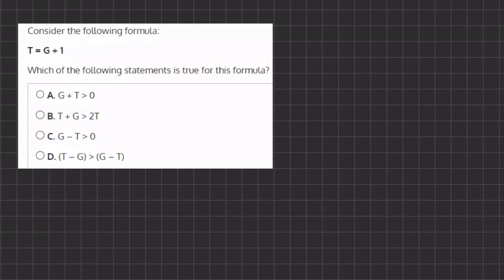All right, let's take a look at this problem. We are given a formula, T equals G plus one. Now, we want to see which of the following statements is true for this formula. And before we begin, let's analyze this formula and see if we have any limitations for T and G.